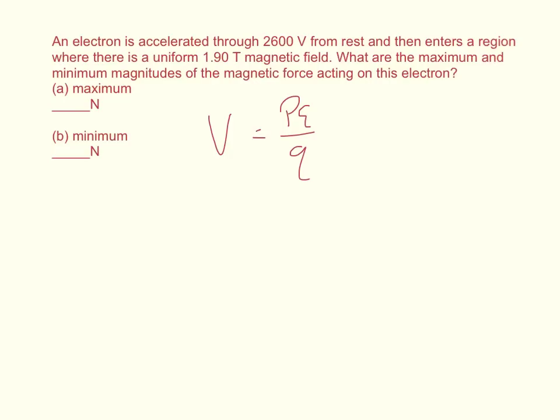In this case we know that our electron is moving, it's being accelerated from rest. So if we use the conservation of energy, we know that the change of potential energy is equal to the change of kinetic energy.